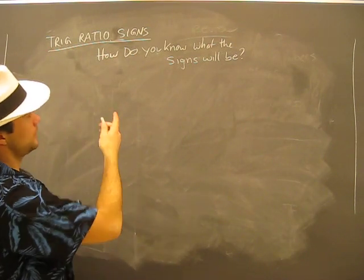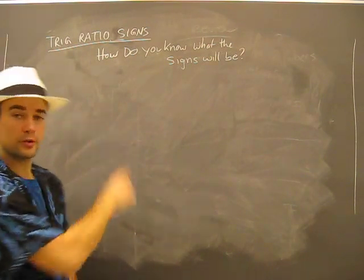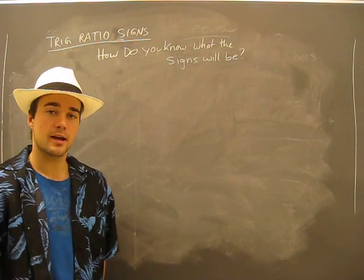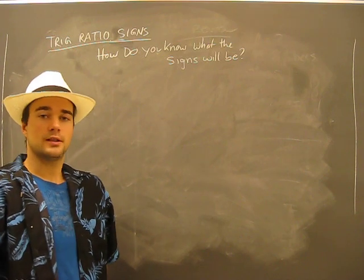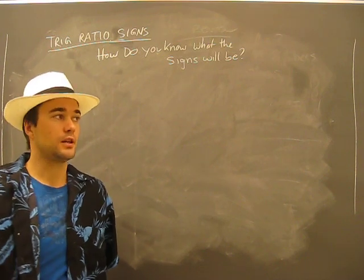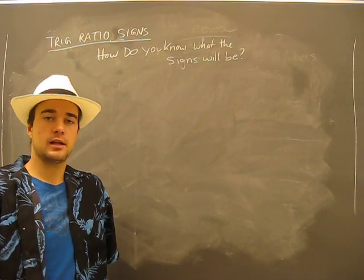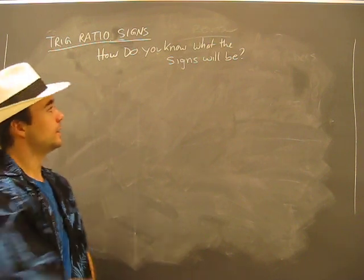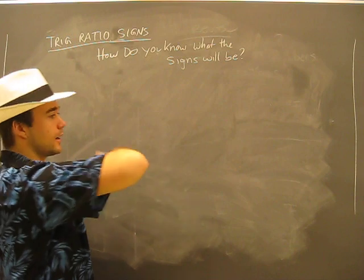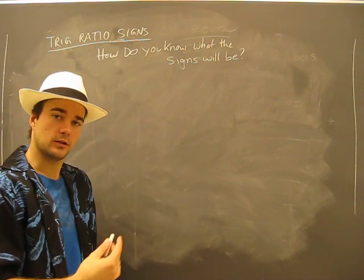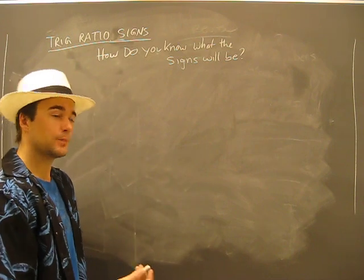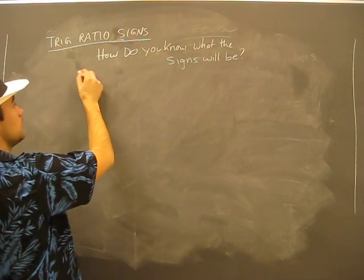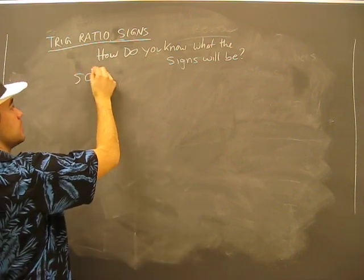This video is going to be about trig ratio signs. How do we know what the signs are going to be? Are they going to be positive or negative or what? So here's a little something to get you thinking about.